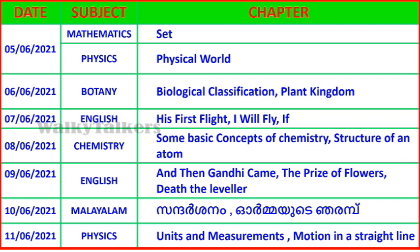For Chemistry, the chapters are Some Basic Concepts of Chemistry and Structure of an Atom. For Malayalam, the chapters include 'Gandhi Came,' 'The Price of Flowers,' and related chapters — you can learn these in Malayalam: Sandarshan and Ormeyad. For Physics, the chapters are Units and Measurement, and Motion in a Straight Line. That completes the first week.